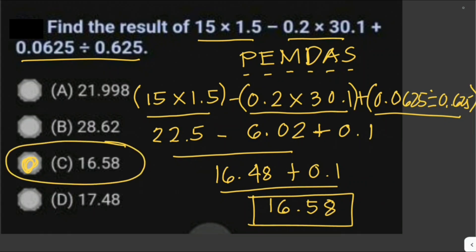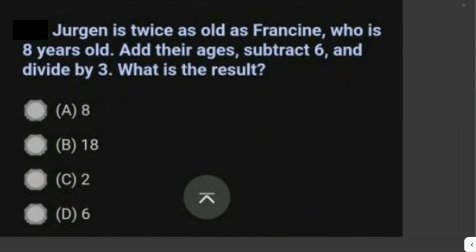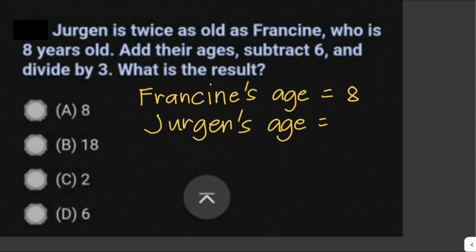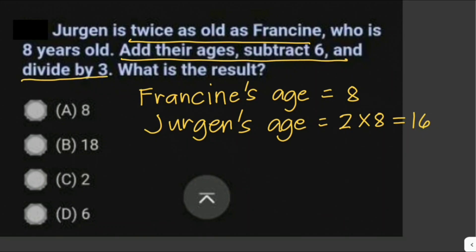Jurgen is twice as old as Francine, who is eight years old. Add their ages, subtract six, and divide by three — what is the result? It's given that Francine's age is eight, and Jurgen's age is twice as old as Francine, so that is 2 times 8, which is 16. Now let's write this sentence into a mathematical equation — it says add their ages.